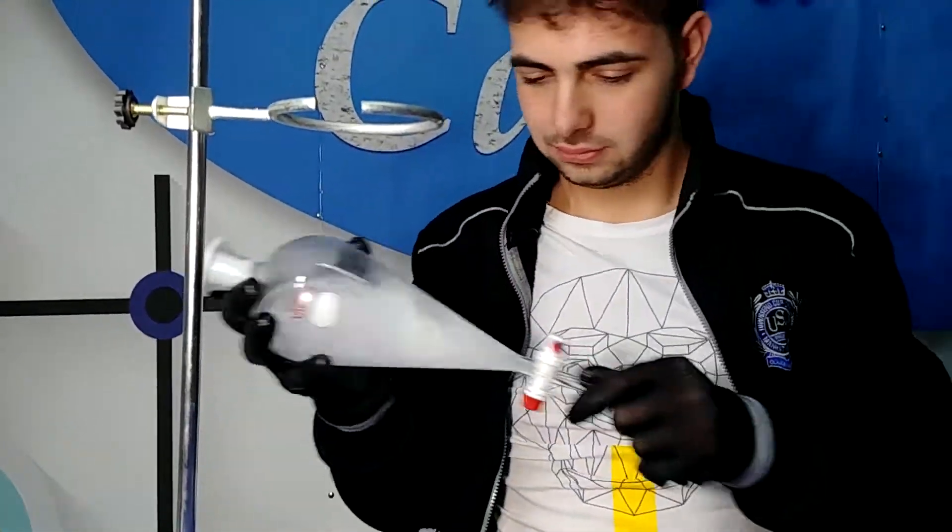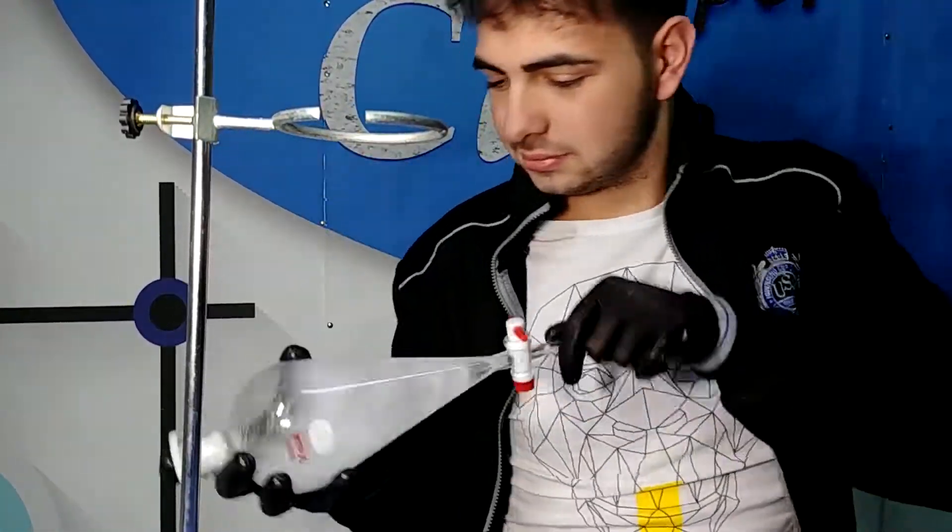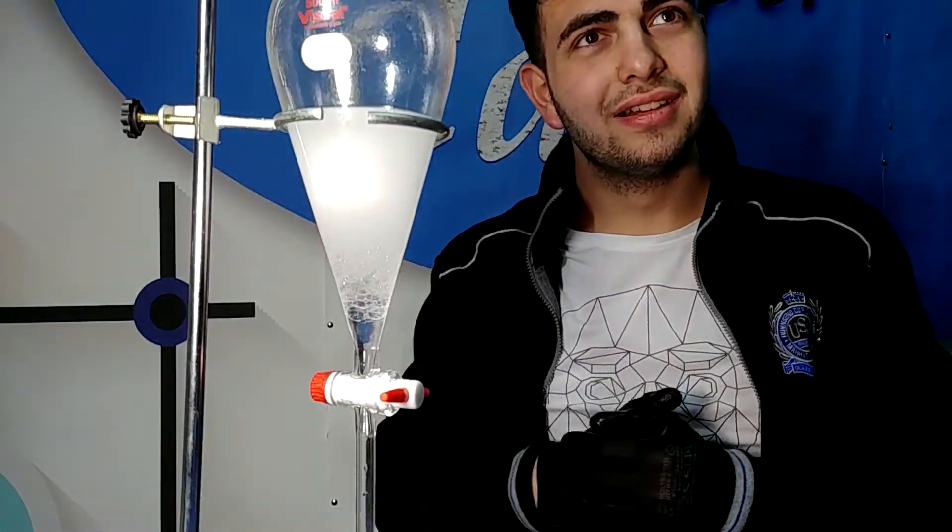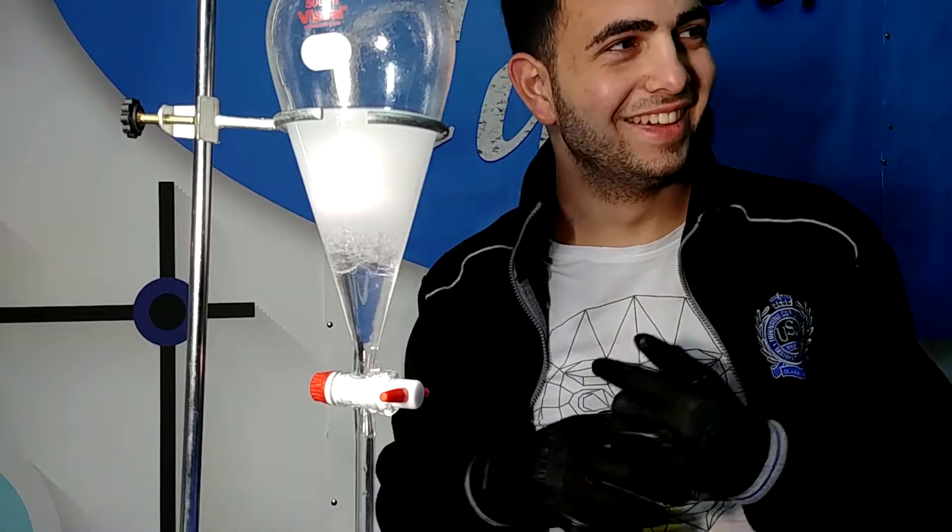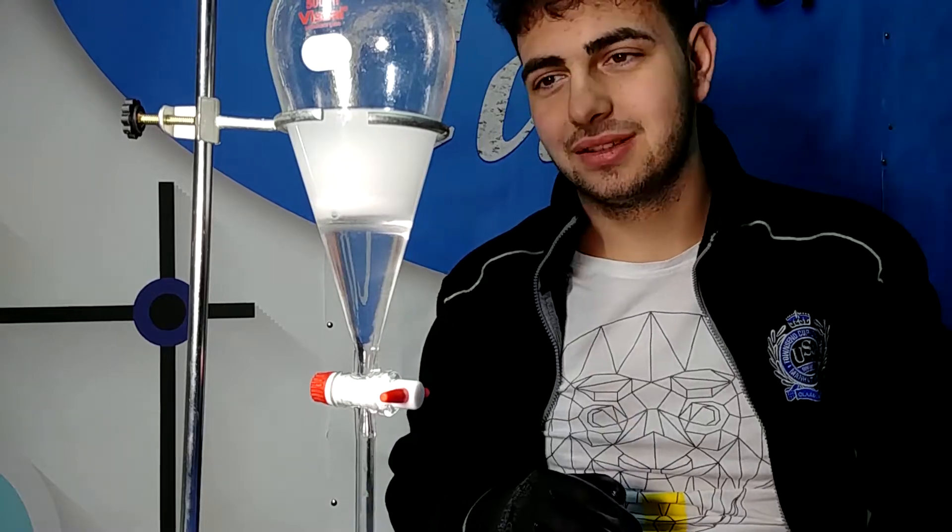After that we just have to put everything together in a separatory funnel. Using DCM that is an apolar solvent we can extract our essential oil because they are both apolar and they are really friendly with each other and they tend to mix with each other.